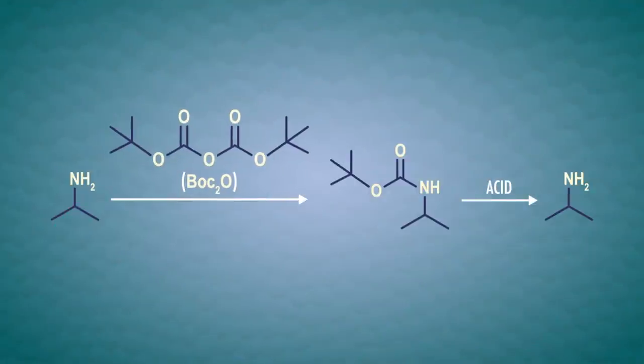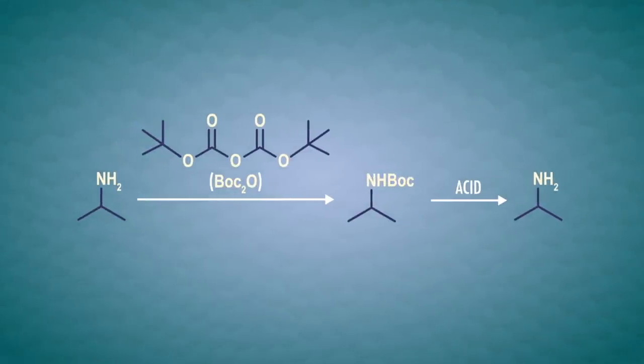A second option is di-tert-butyl dicarbonate, more commonly known as Boc anhydride. In the presence of a base, we add a tert-butoxycarbonyl, or Boc, group in one of the hydrogens on the nitrogen in the amine. And we can remove it easily by adding acid.